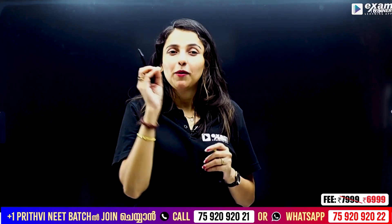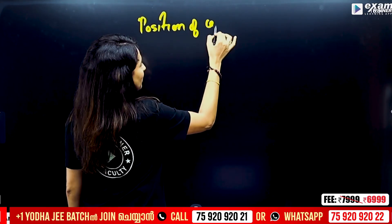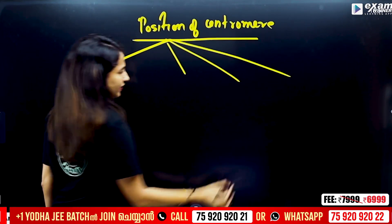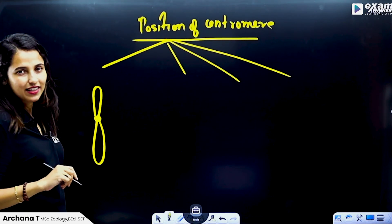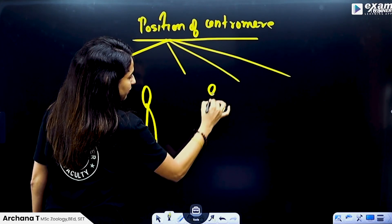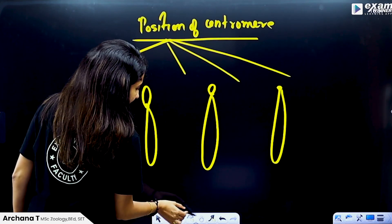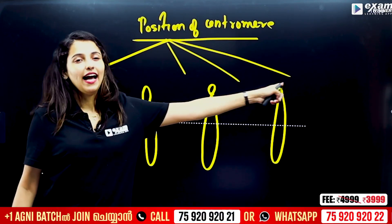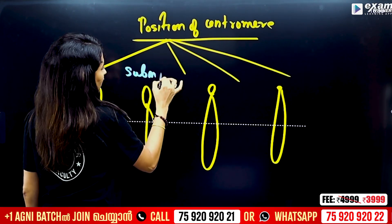In the position of the centromere, we have 4 types of chromosomes. If we have 4 types of chromosomes: metacentric is exact center; then we have submetacentric, little away from center; far away from center; and tail region. So: meta, submeta, acro, telo. Exact center, little away, far away, and tail region.